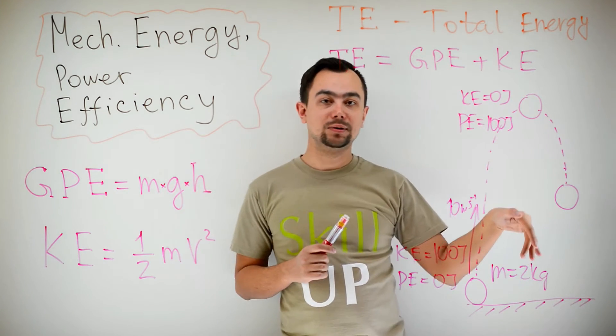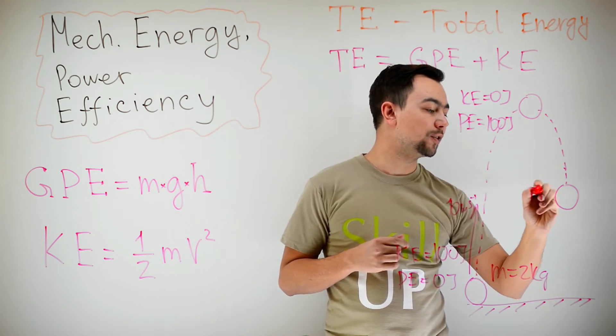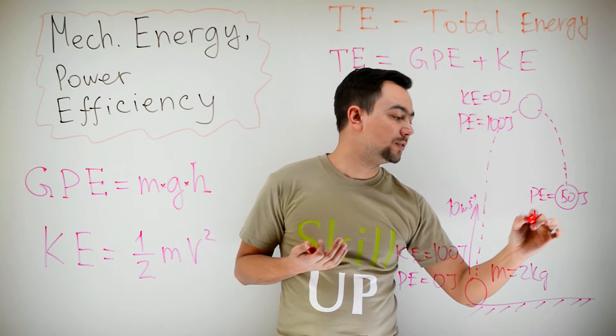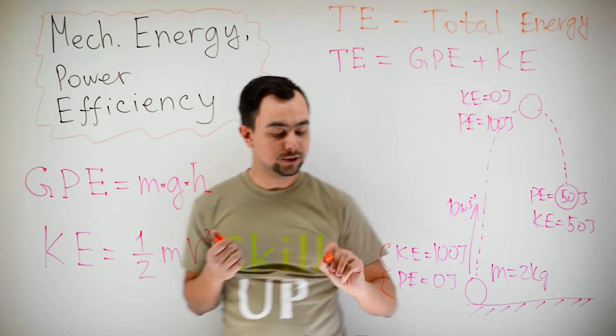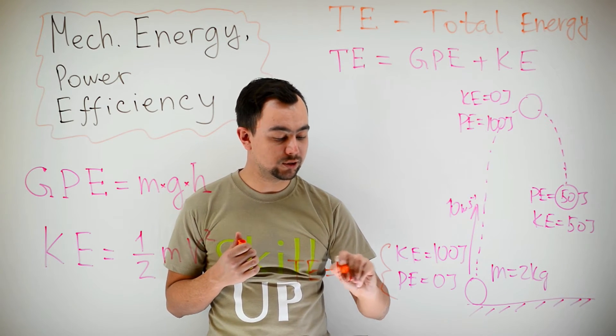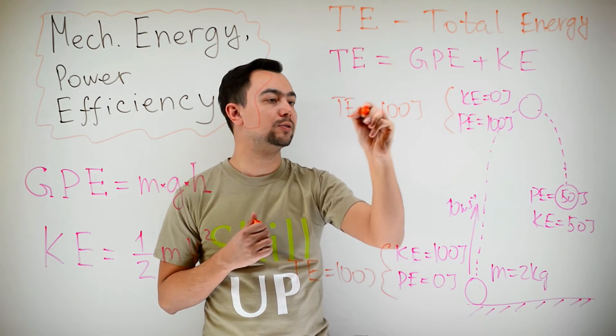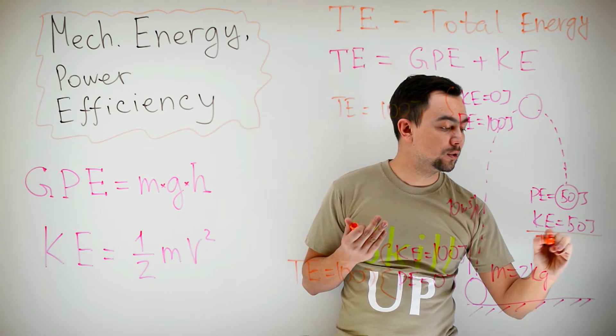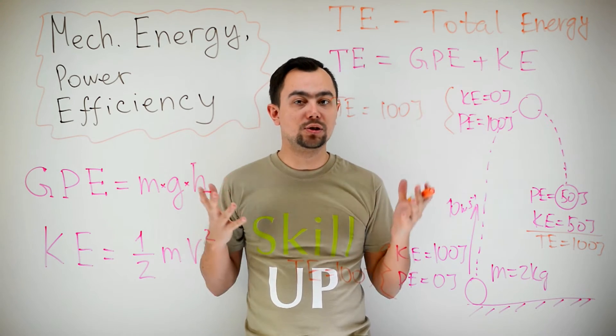Halfway down, the ball has half the maximum potential energy. So the potential energy of the ball is 50 joules, and the kinetic energy also has to be 50 joules. The total energy here is equal to 100 plus 0, it's 100 joules. Total energy here is once again 100 joules. So, total energy remains constant, it does not change.